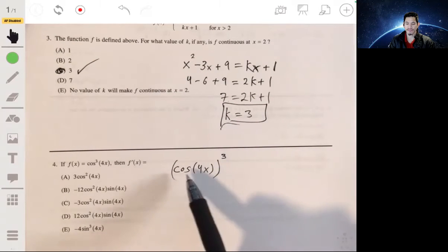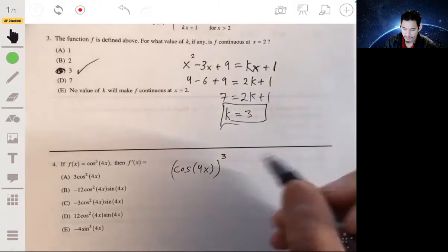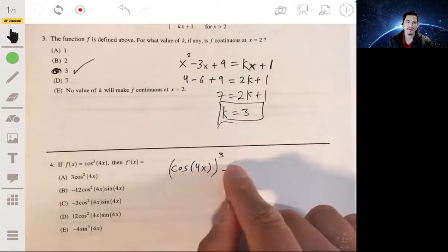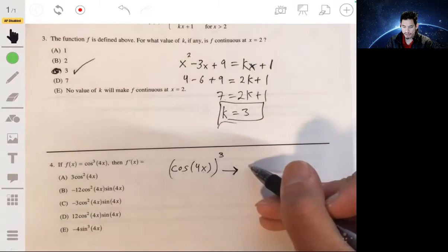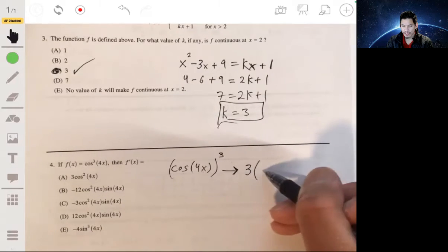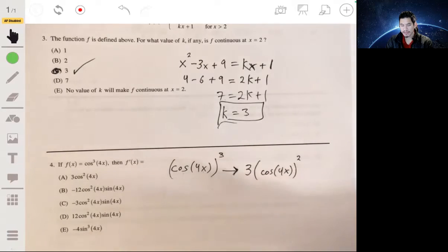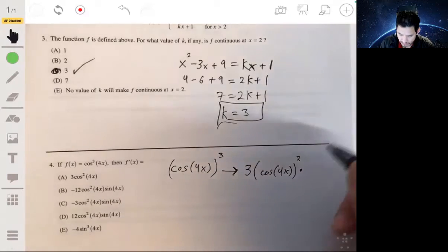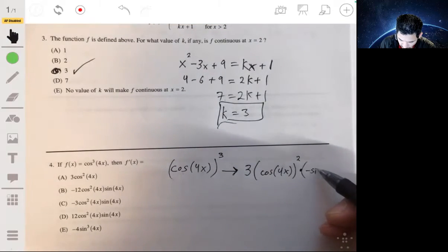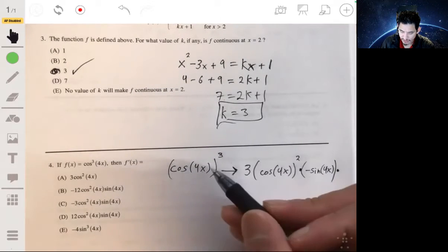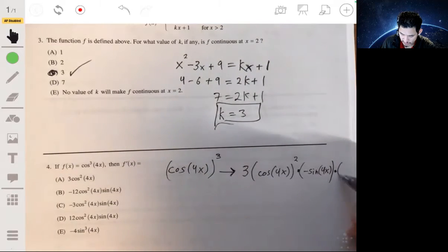When we want to take the derivative of this, we first take the derivative of the cube function. Using power rule, we'll have three times the cosine of 4x to the second multiplied by the derivative of the cosine function, which is the negative sine of 4x, multiply by the derivative of 4x, which is just 4.